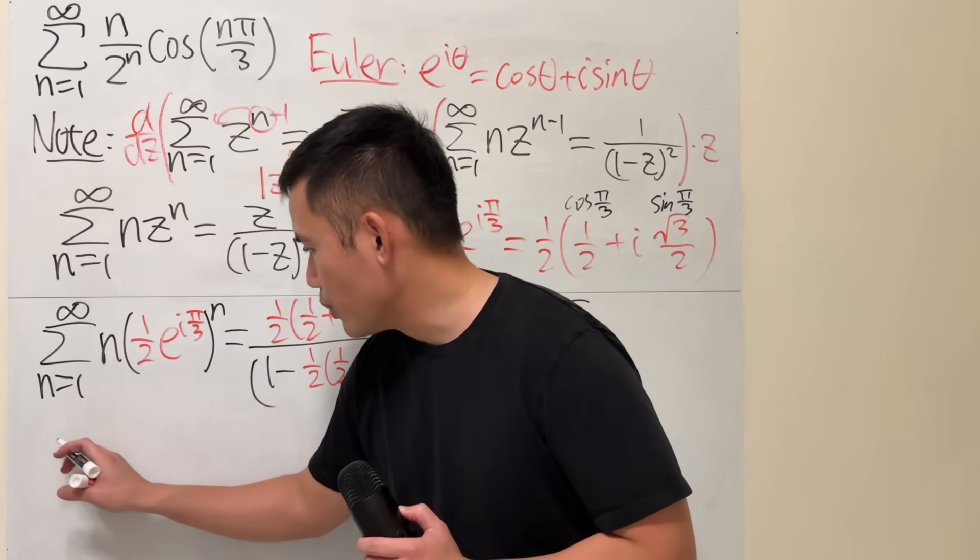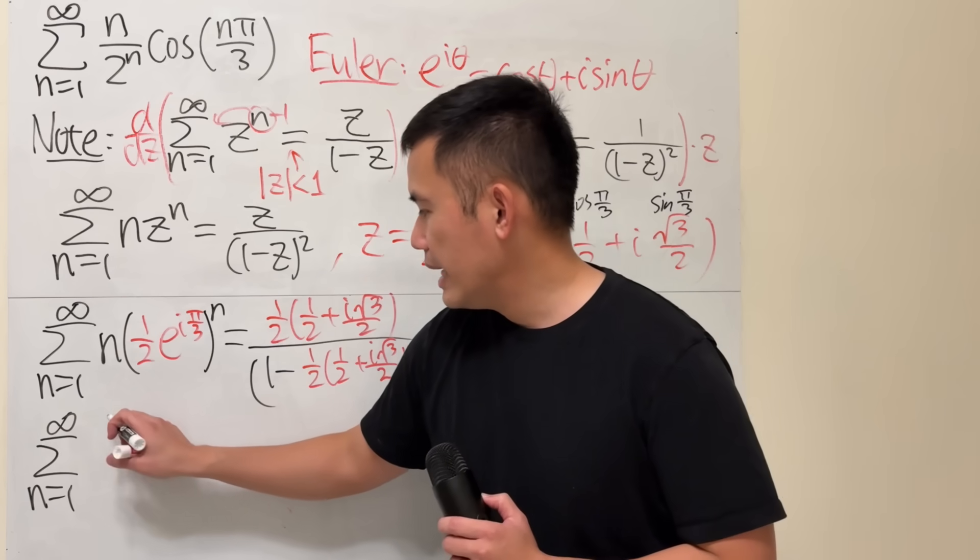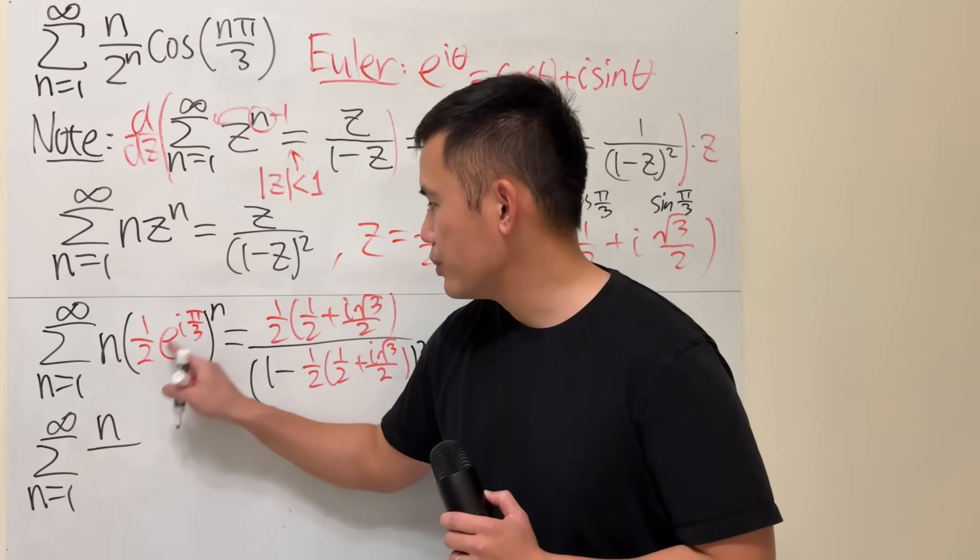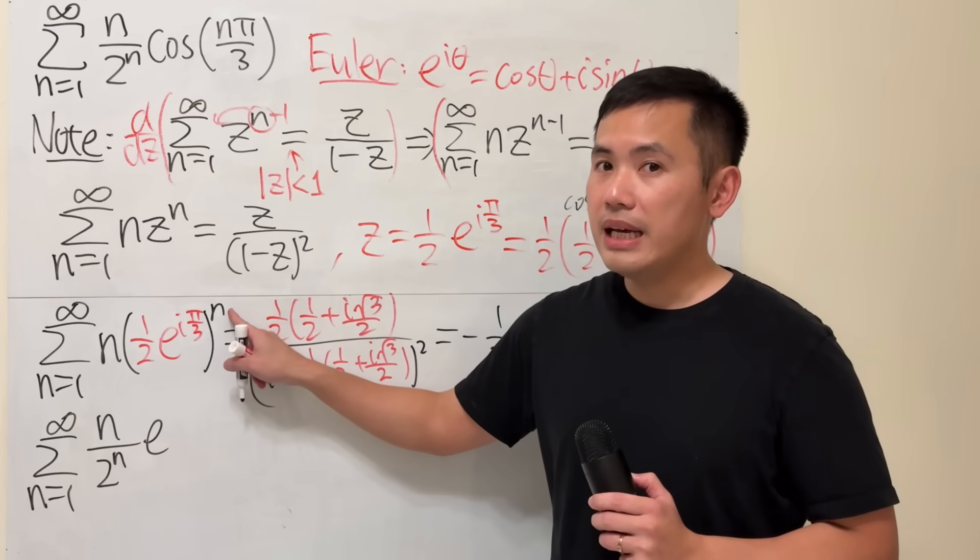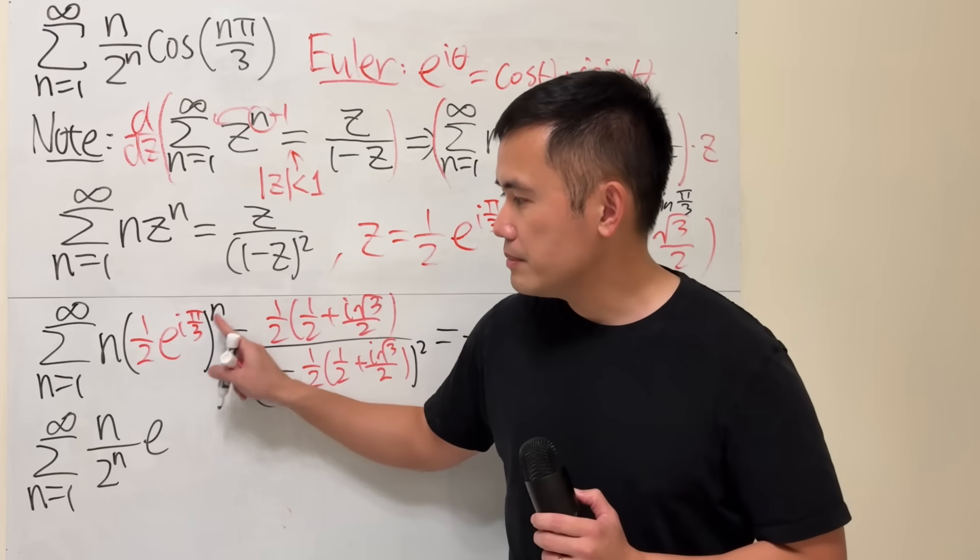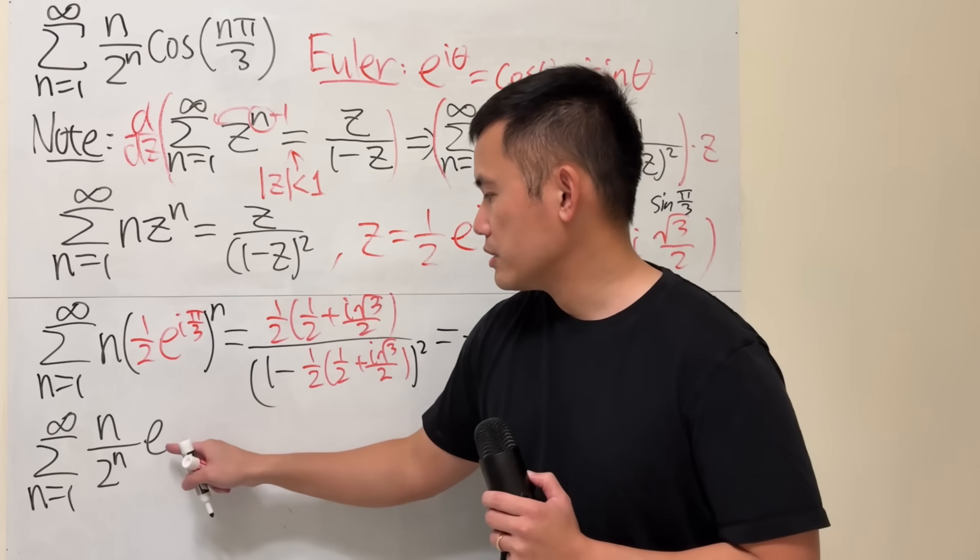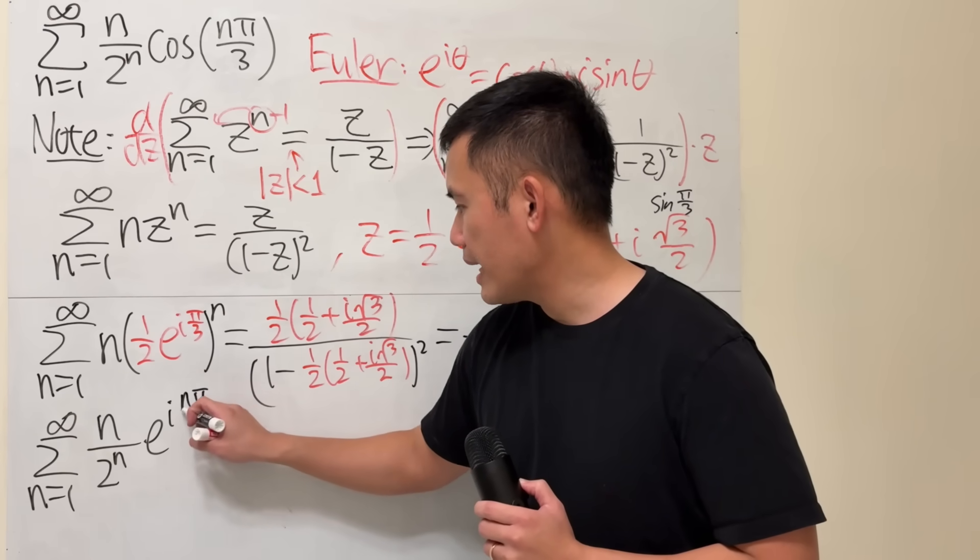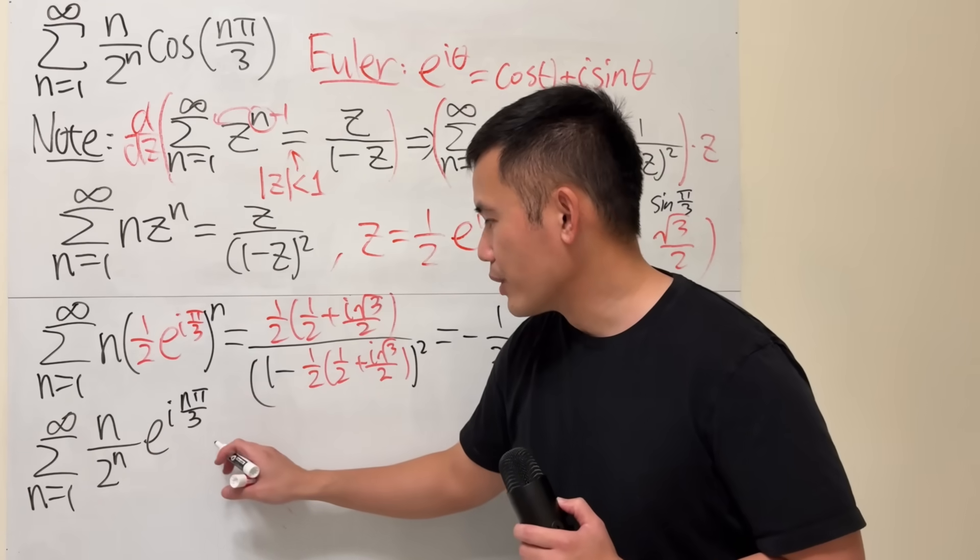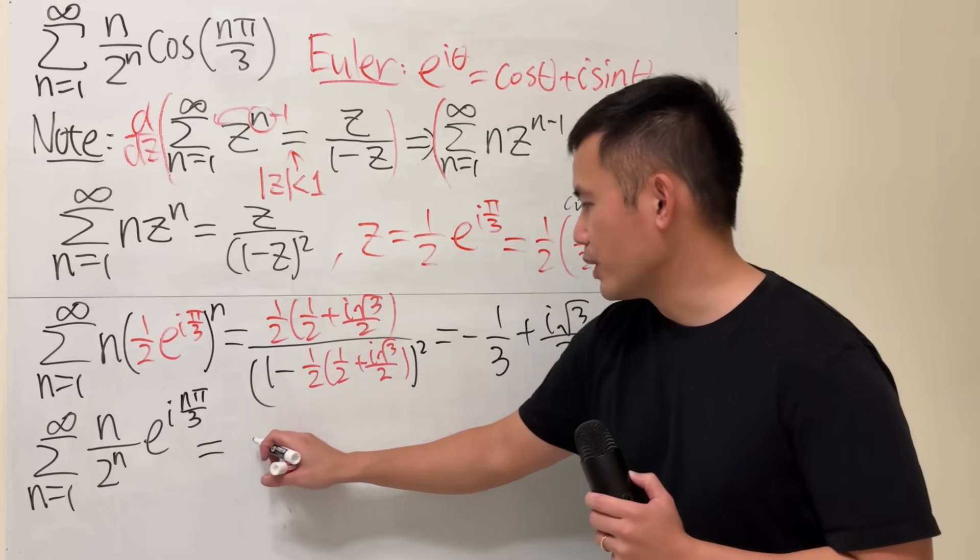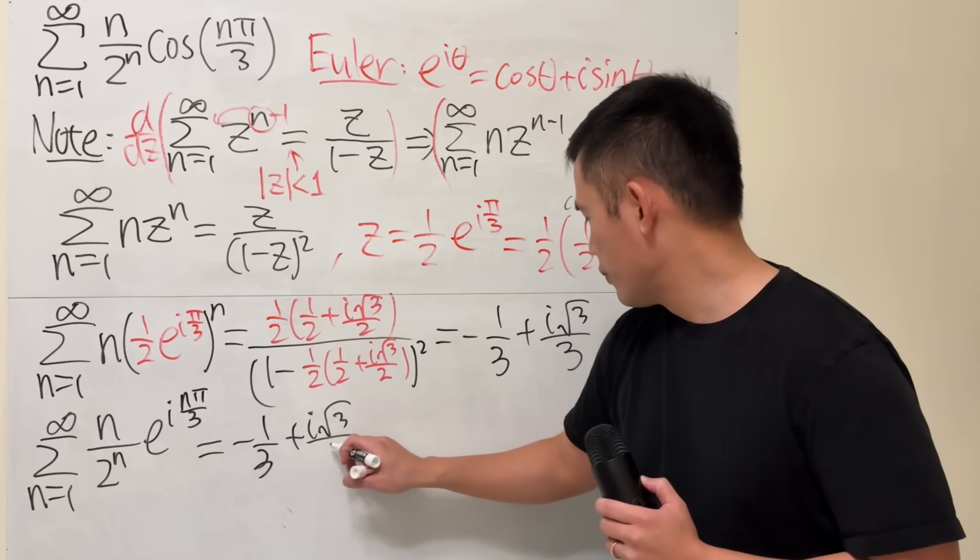On the left-hand side, this will give us precisely the series as n going from 1 to infinity, n over 2 to the n, and then this right here is e to the i n pi over 3, because n is a positive whole number. We can just multiply the exponents. If you work this out, you will end up with negative 1 third plus i square root of 3 over 3.